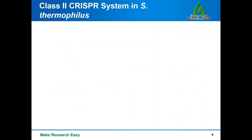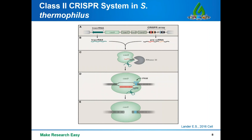The most widely used CRISPR-Cas9 system comes from Streptococcus thermophilus. The tracrRNA is expressed from the CRISPR locus, and after transcription, pre-crRNA is produced. RNase III processes this RNA, and the processed RNA binds to the Cas9 protein along with the crRNA to form a functional complex. This complex targets the PAM — proto-spacer adjacent motif — and the Cas9 nuclease cuts three base pairs upstream of the PAM, generating a double-strand break.